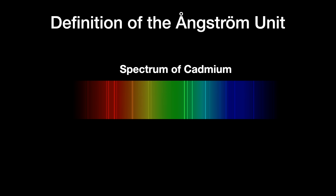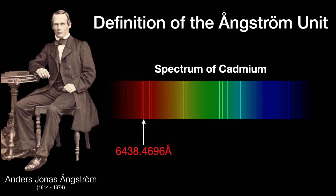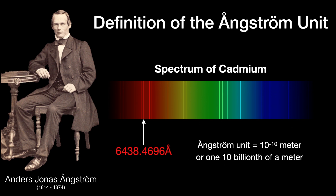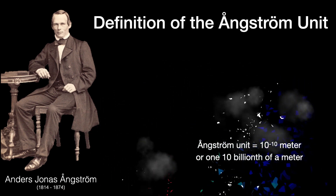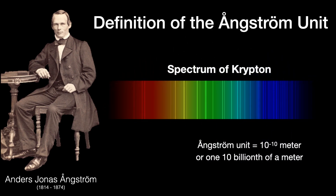In 1907, cadmium became the standard by which length was measured. The International Union for the Cooperation in Solar Research — which later became the International Astronomical Union — defined the international angstrom by declaring the wavelength of the red line of cadmium equal to 6438.4696 international angstroms. This was endorsed by the International Bureau of Weights and Measures in 1927. The angstrom unit is named after Swedish physicist Anders Jonas Ångström, and equals 10⁻¹⁰ or one ten-billionth of a meter. However, in 1960, both the meter and the angstrom were redefined using krypton instead. Poor cadmium.